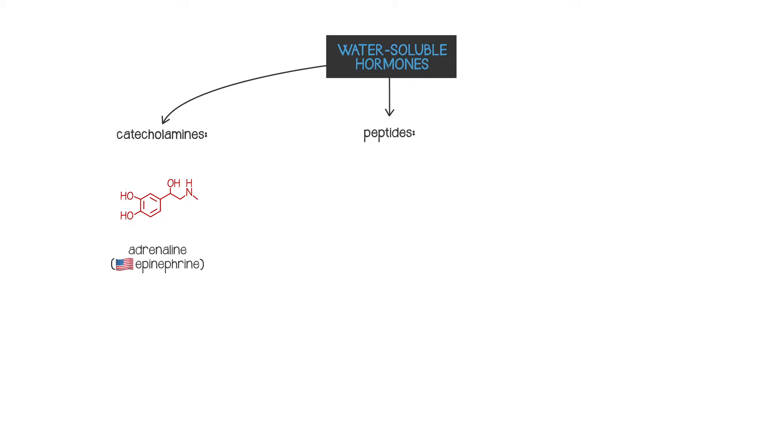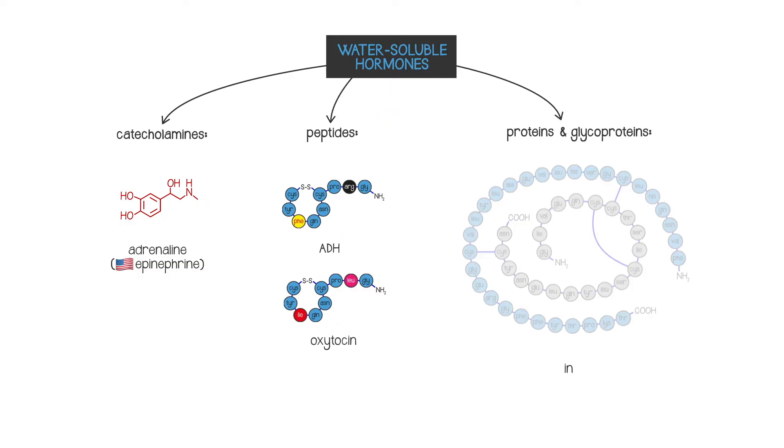Peptide hormones are also water-soluble. They're made from just a few amino acids connected together, while protein and glycoprotein hormones are also made from amino acids but they're much bigger.